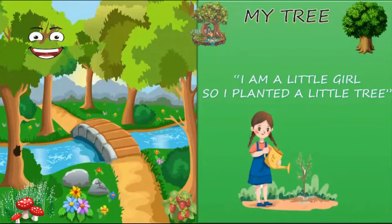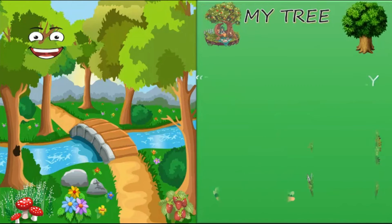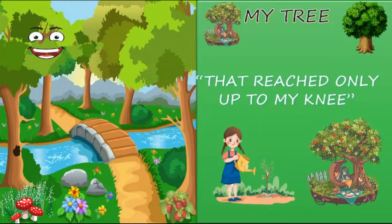Line 1: 'I am a little girl, so I planted a little tree.' The author is telling us that she is a little girl and she planted a little tree. What is the spelling for 'planted'? That's correct — P-L-A-N-T-E-D. Planted. The tiny girl has also planted a tiny tree.